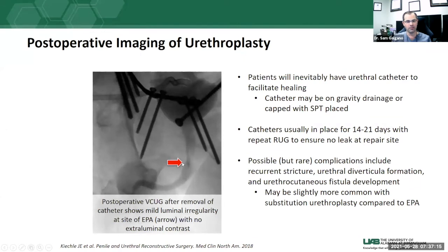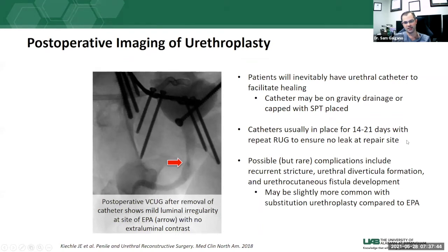On a postoperative retrograde urethrogram or VCUG, some mild luminal irregularity at the urethroplasty site is expected. The key finding to look for is leak — contrast extending outside the urethral or bladder lumen — not residual stenosis. Catheters are typically kept in place for two to three weeks postoperatively, after which the urethrogram is repeated. If there is no leak, catheters are removed. Some literature suggests complications may be slightly more common with substitution compared to excision-and-anastomosis urethroplasty, though this is not well established.